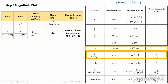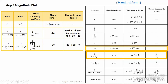For the second term 1/(1 + 0.02s), the corner frequency is ωc2 = 50 rad/s and the slope is again −20 dB/decade. The change in slope is the previous slope (20) plus the current slope (−20), giving 0 dB/decade. So we have found the base slope values for the system.